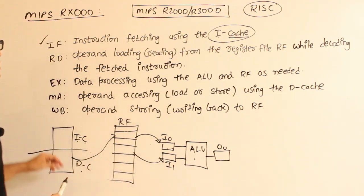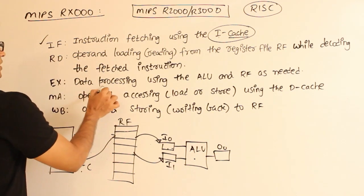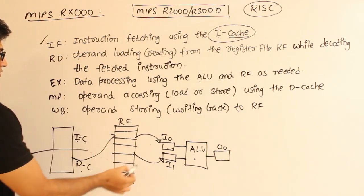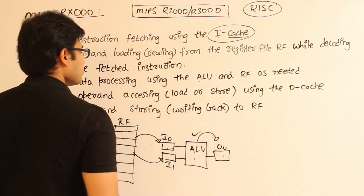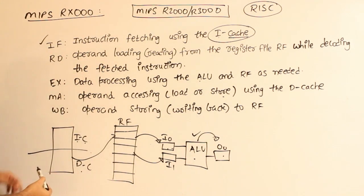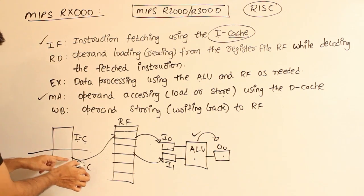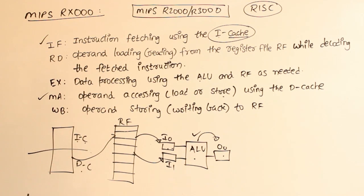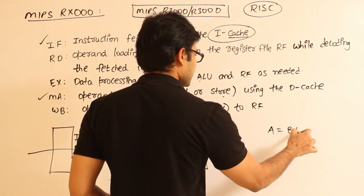This way we cleverly avoid structural dependency for load and store. The next phase is EX — data processing using the ALU. Once operand loading is done, execution happens and the result is placed in the output register. After that is the MA phase — memory operand accessing (load or store) using D-cache. This is the phase that actually loads data from the D-cache into the register file.